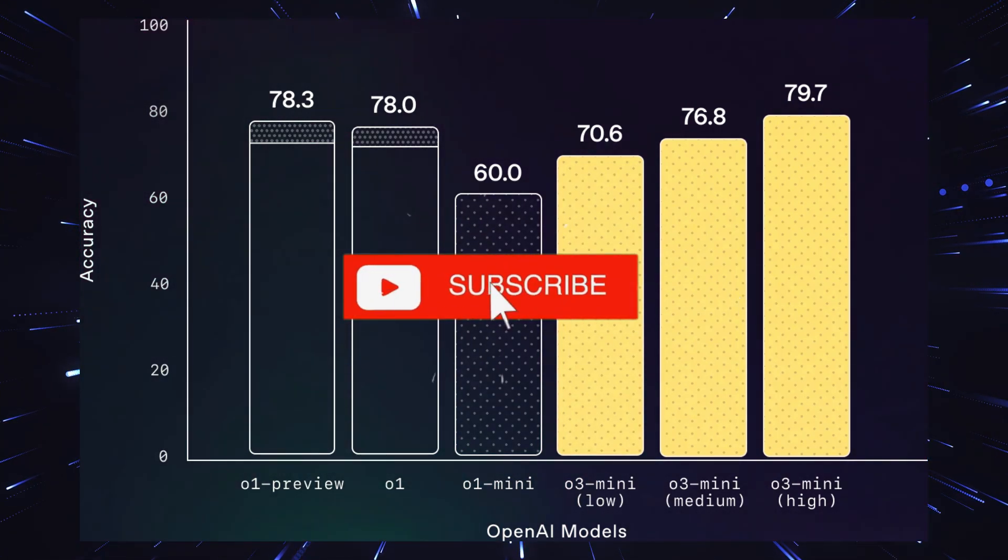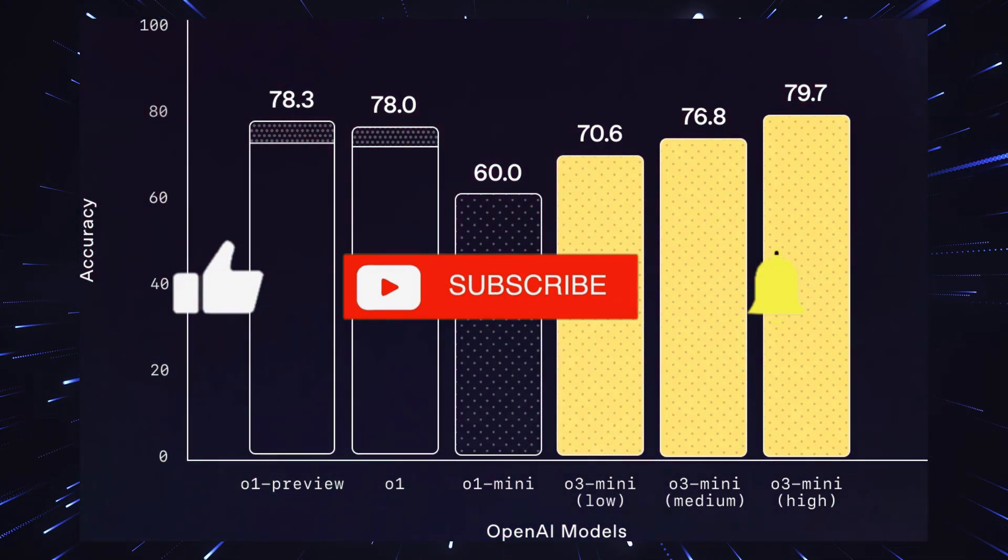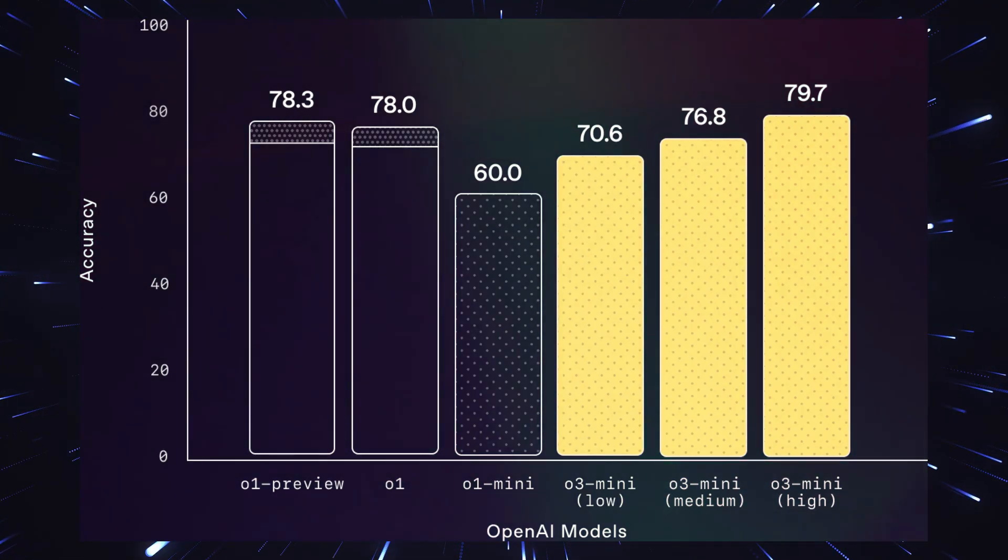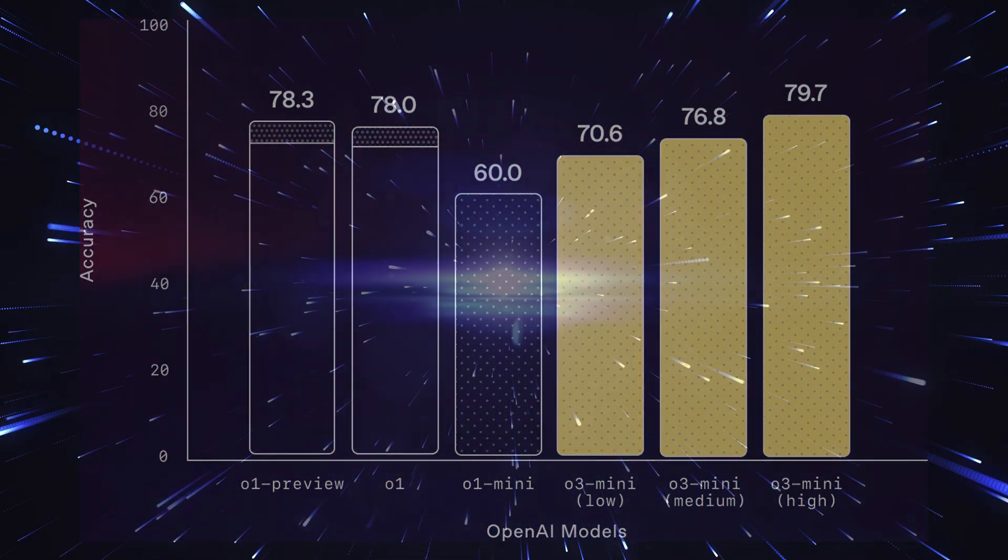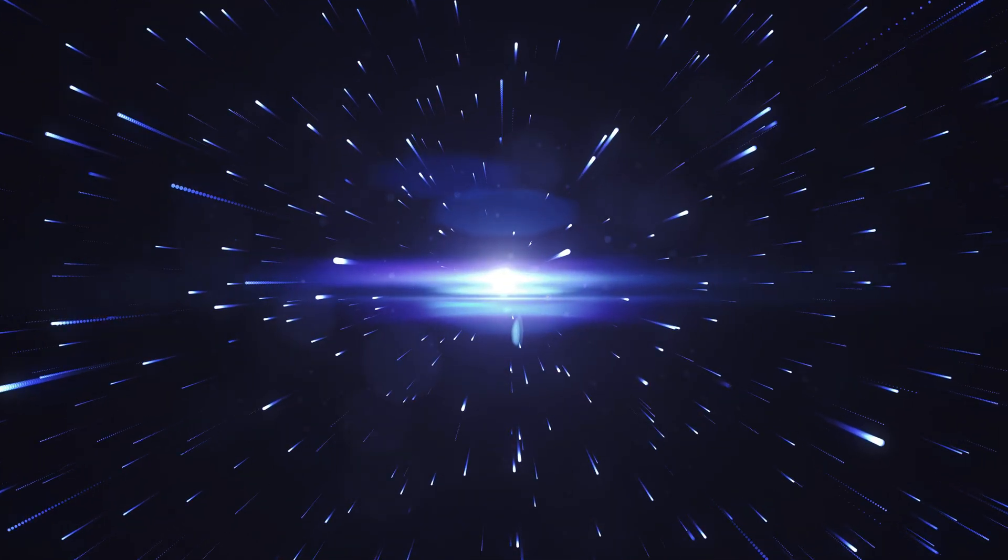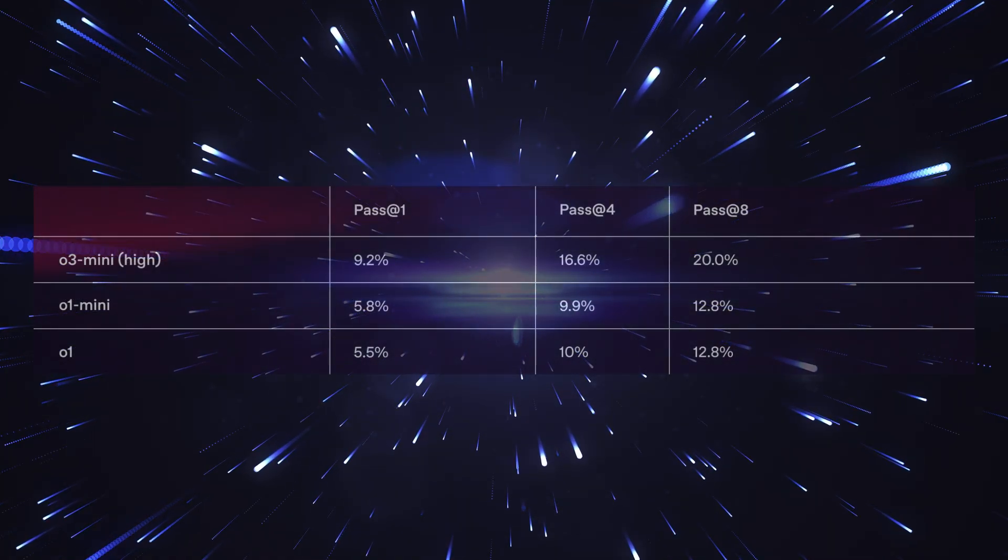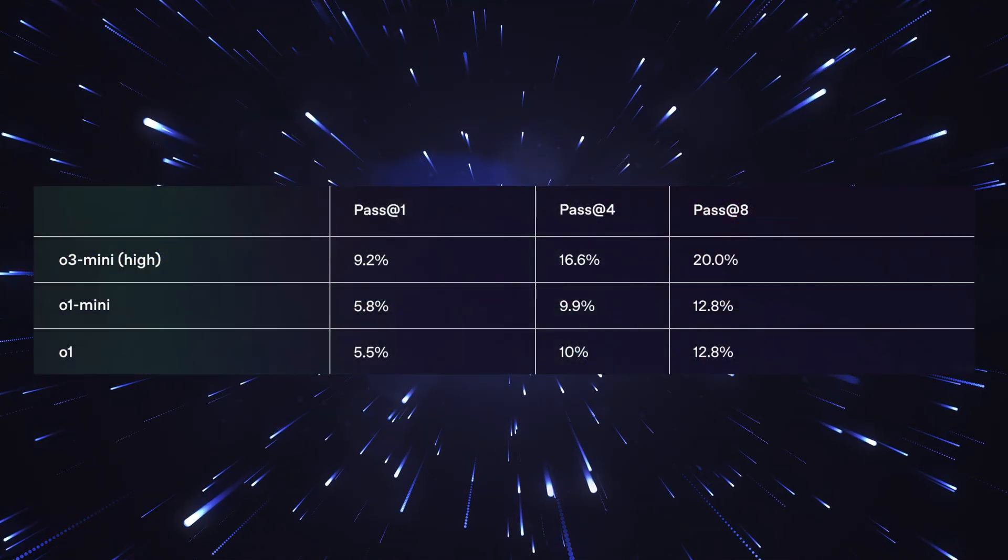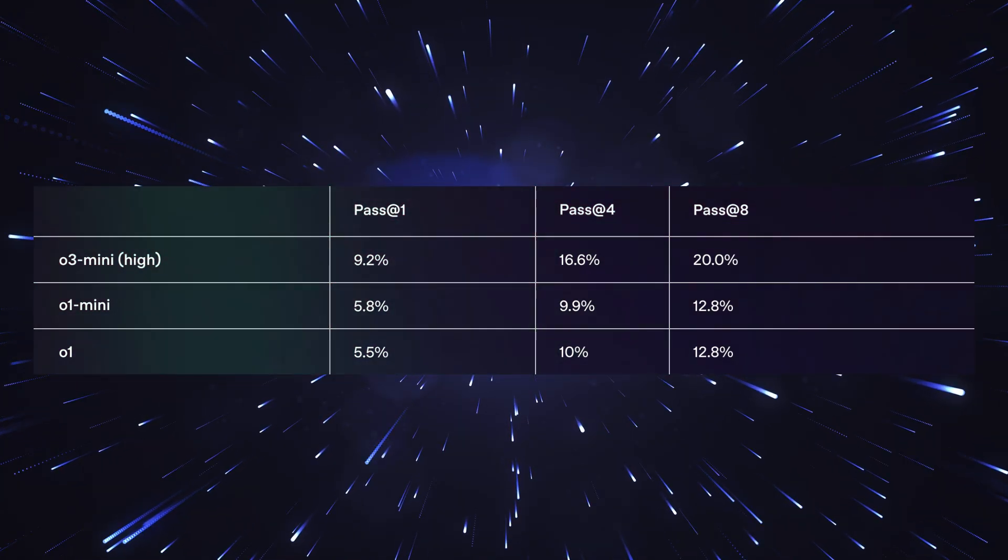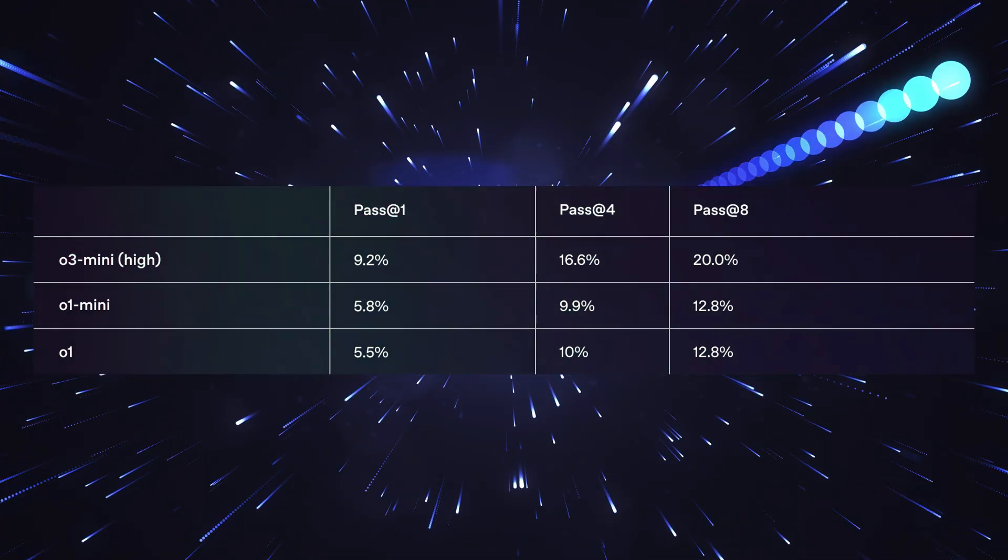This speed is particularly noticeable in complex programming tasks, where other models often need several minutes for analysis and code generation. A particularly interesting detail, which got somewhat lost in the official announcements, concerns the safety classification because O3 Mini is the first model to achieve a medium risk classification in the model autonomy category, which means we're really moving at the boundary of what OpenAI considers safe enough for public access. This classification is based on various factors such as the model's ability to solve complex problems independently and make autonomous decisions.